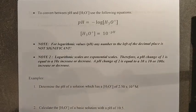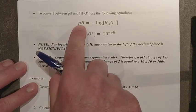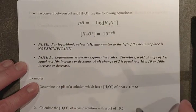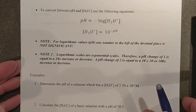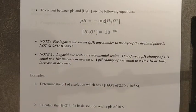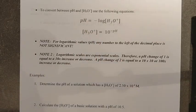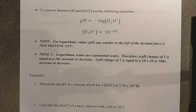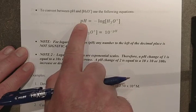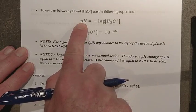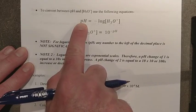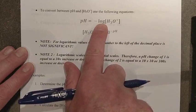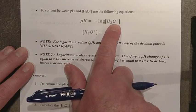pH being a logarithmic value means we have to be able to use the log formula. This is normally something not presented until Math 30, but I think we can handle the simple movements between logs and exponents needed for pH and hydronium. The pH number — the value we get for acidity or basicity — is equal to the negative log of the hydronium ion concentration.